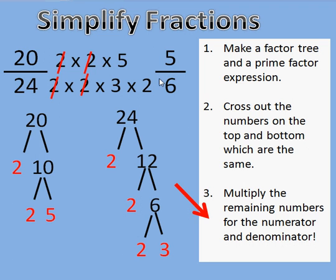Now sometimes you could say, well can't I just divide the top and the bottom by the same number? And you can. But what if I divide the top and the bottom by 2? Well 20 divided by 2 would be 10. And 24 divided by 2 would be 12. And that's not the smallest fraction.